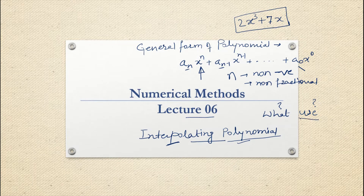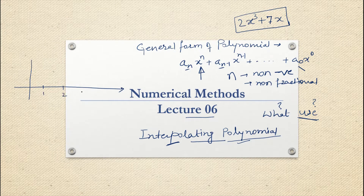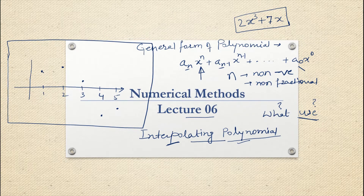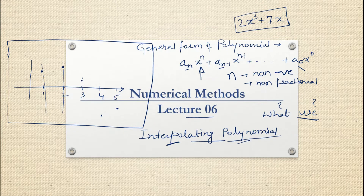Now, to understand the use of interpolating polynomial in our day-to-day life, let me draw a graph. I am plotting values 1, 2, 3, 4 on the x-axis. These are a few points plotted on an x-y axis. At x = 0.1, 0.2, 0.3, and so on, I know the exact values on the y-axis. These are the true, exact values given to me.